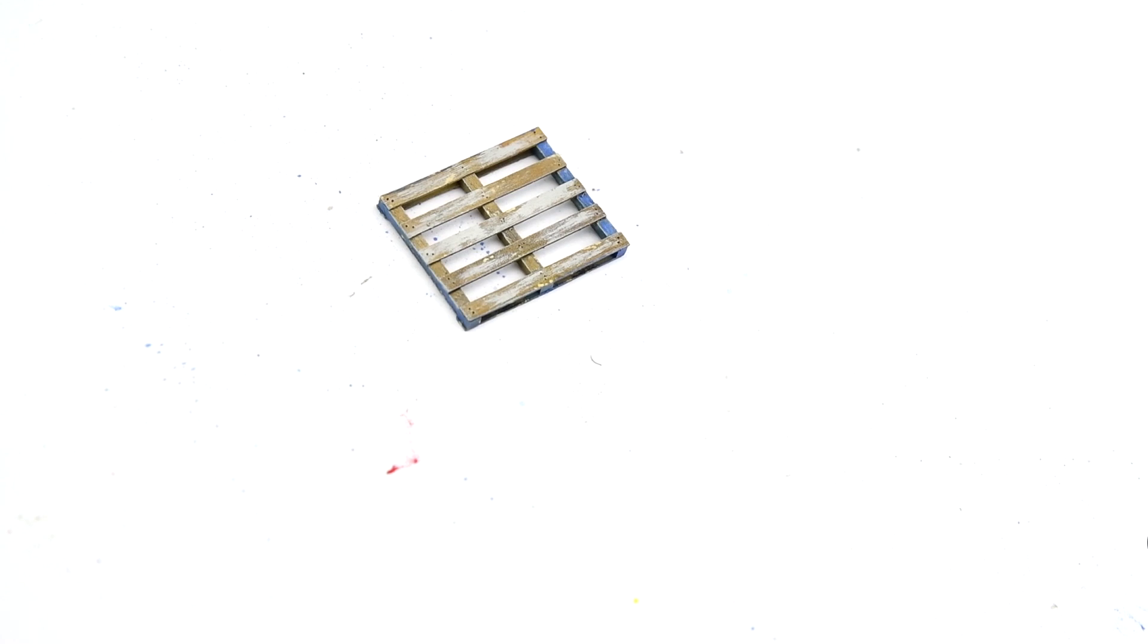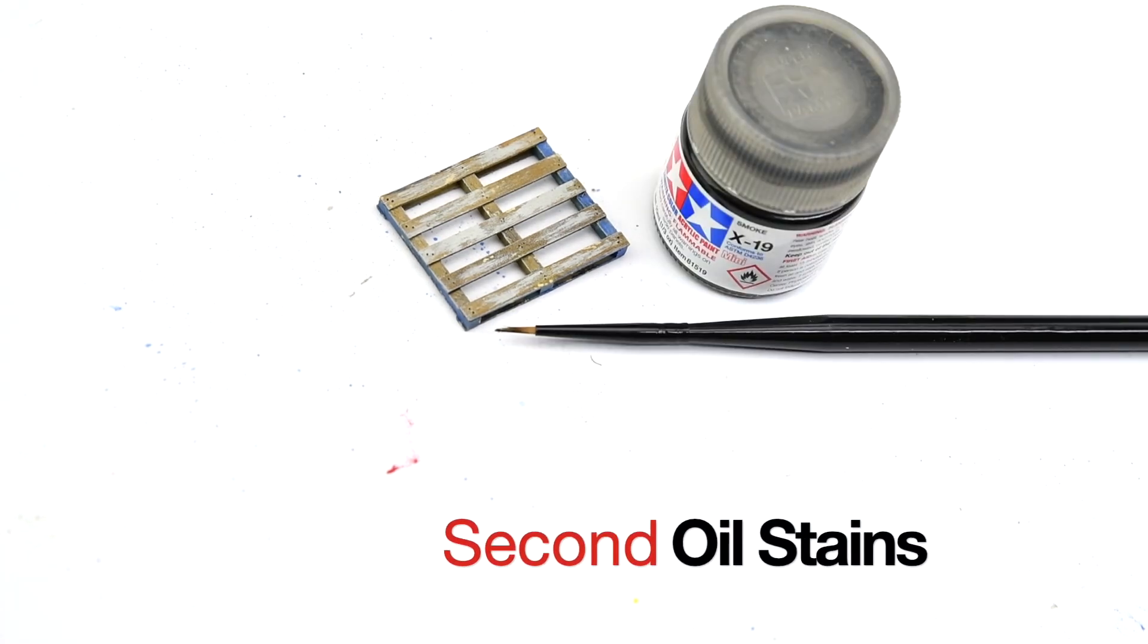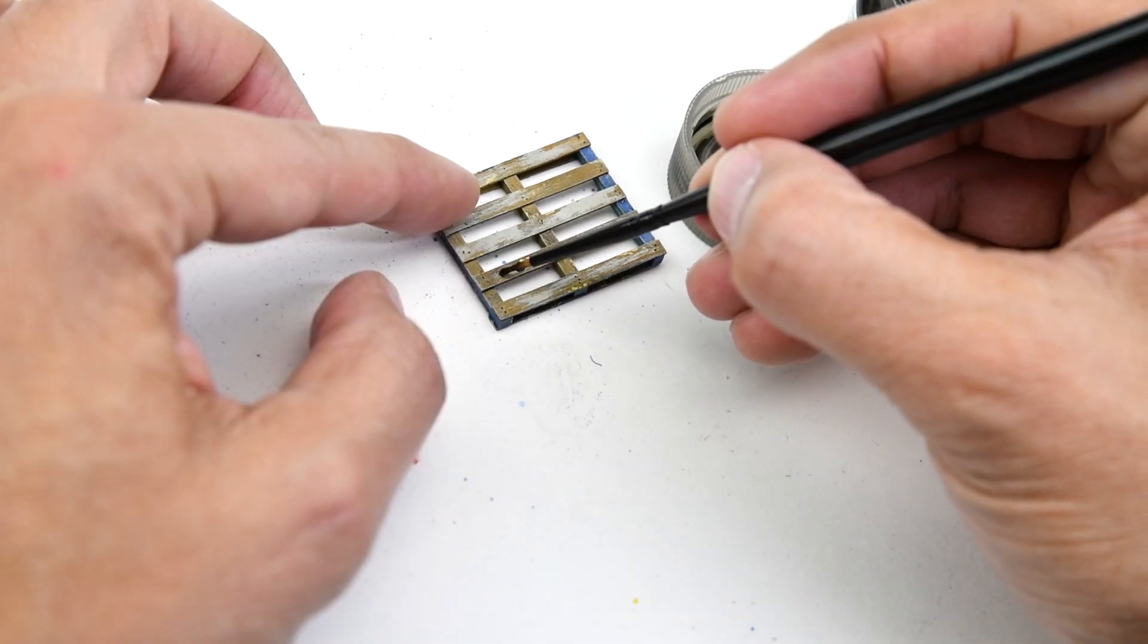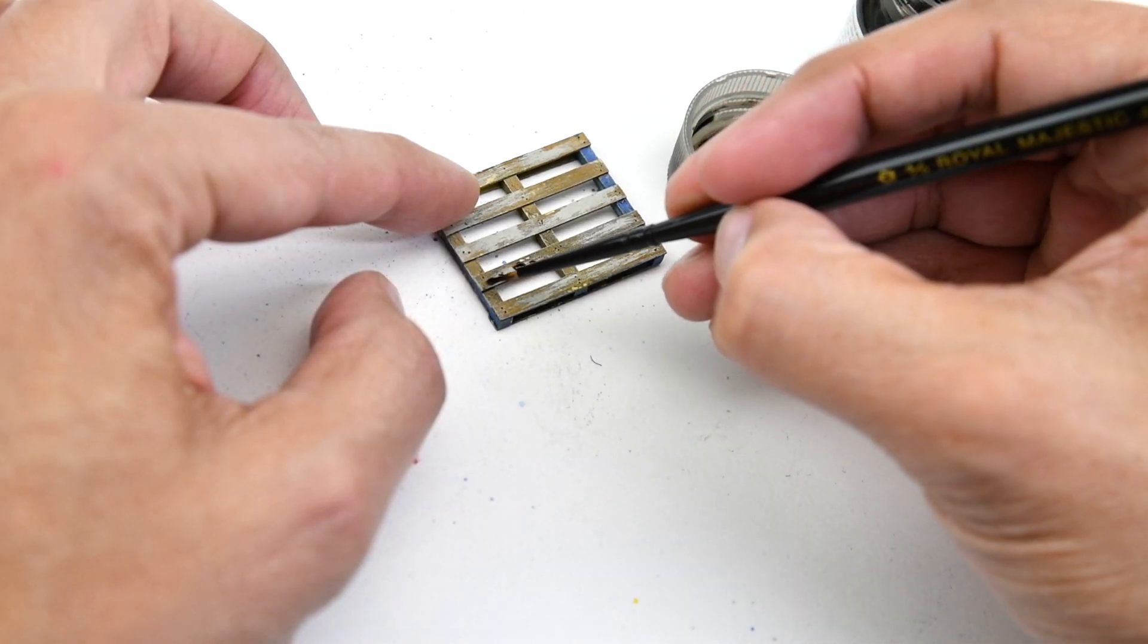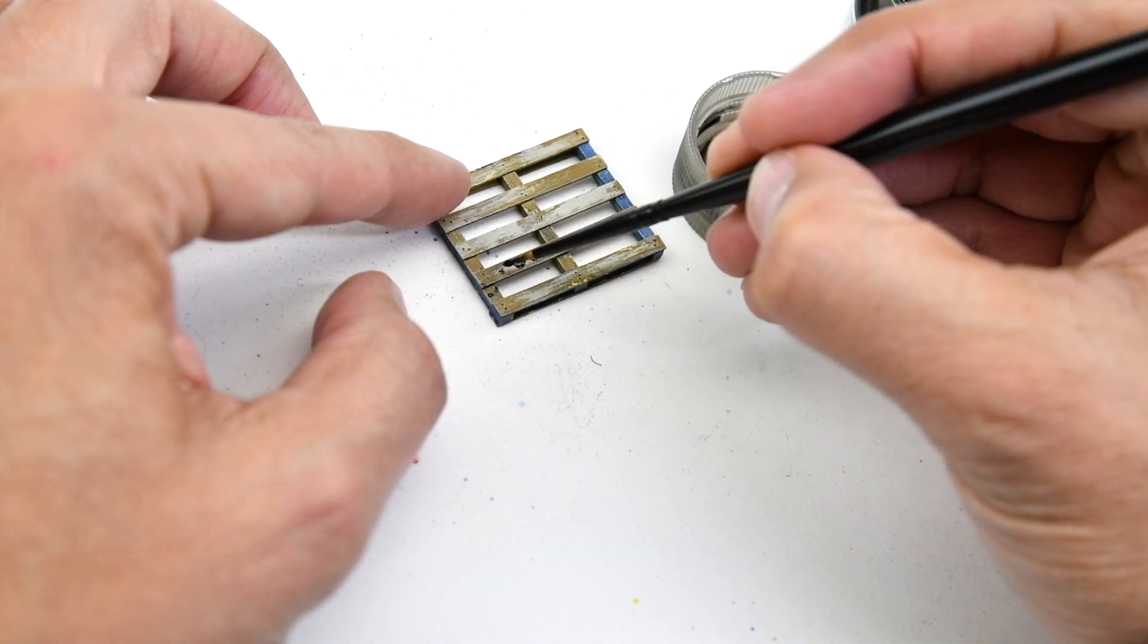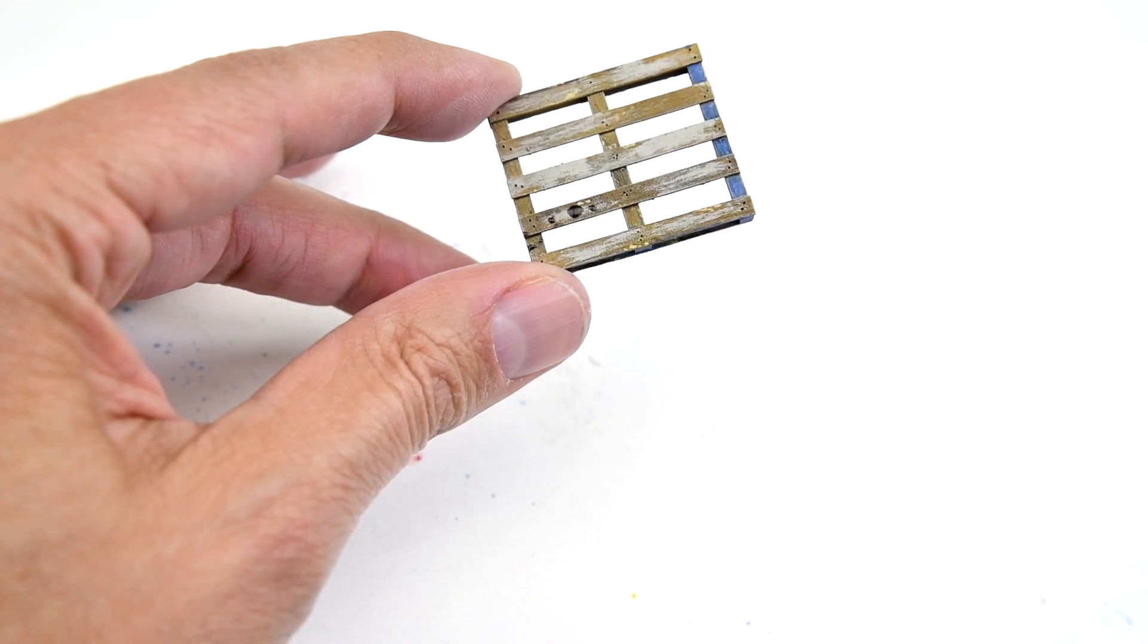The next technique is about fresh oil or fuel stains, using Tamiya smoke paint to simulate recent dripped liquid marks. This paint leaves a realistic fresh and shiny finish. A very easy trick that adds a lot of character to the pallet.